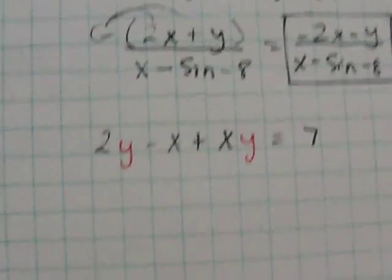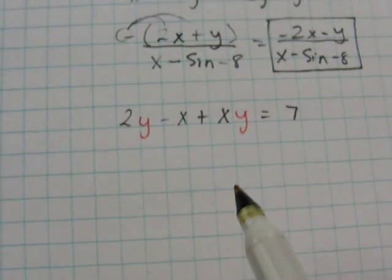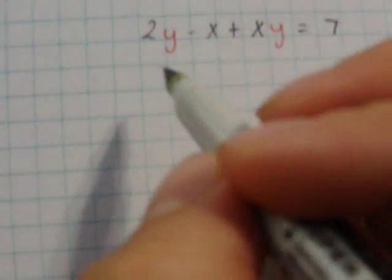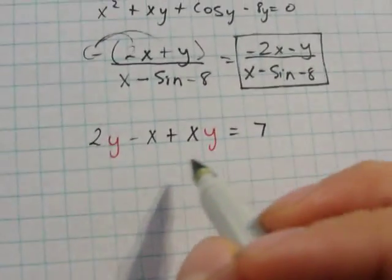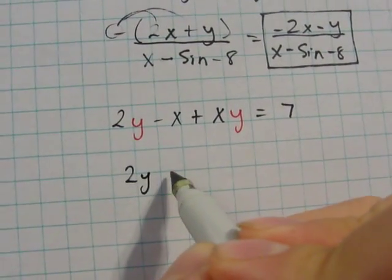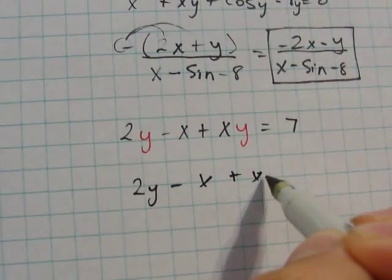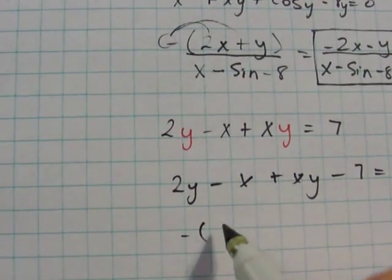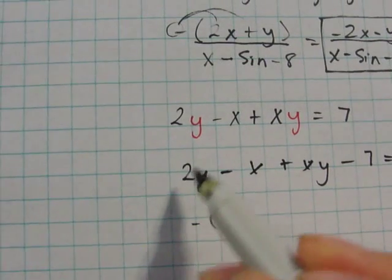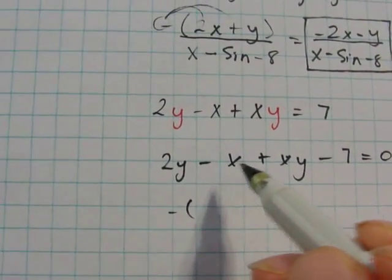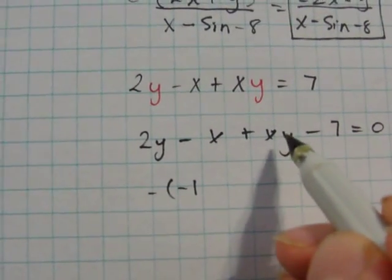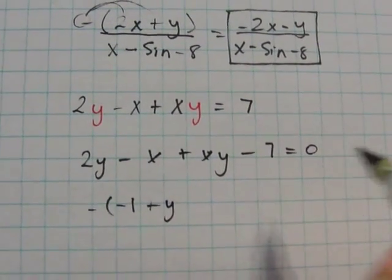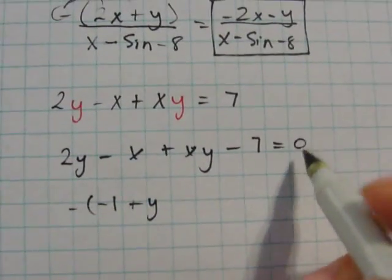Let's move on to the next one. Sorry for the shaky camera work — it's kind of hard explaining something, writing, and keeping the camera on the equation at the same time. So you want to set your equation equal to zero: 2y minus x plus xy minus 7 equals zero. Now you can use your formula again, so anywhere there's an x you're going to take the derivative of that x. There's no x in 2y. The derivative of negative x is negative 1. There's an x in xy so the derivative of xy is y. The derivative of 7 has no x so that's ignored.